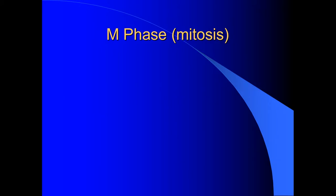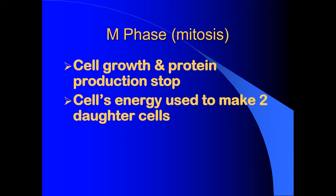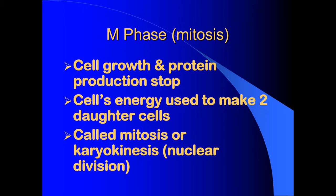Then we have mitosis, called the M phase. Here's where cell growth and protein production stop. The cell has to focus on other things at this time, so they stop growing and don't produce any more proteins. If the needed proteins hadn't been produced before mitosis, it's very likely that you would have errors in mitosis, which could lead to certain cancers or other problems with your cells. Generally, if this happens in one or a hundred cells, that's not a big deal — your body just gets rid of them. But if it happens in a more widespread fashion, this is a problem. The cell is using its energy here to make two daughter cells, in a process called either mitosis or karyokinesis, which is nuclear division.